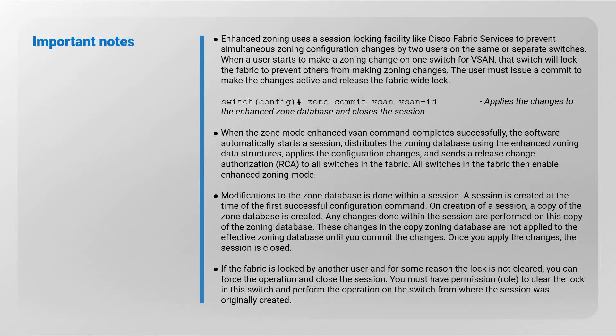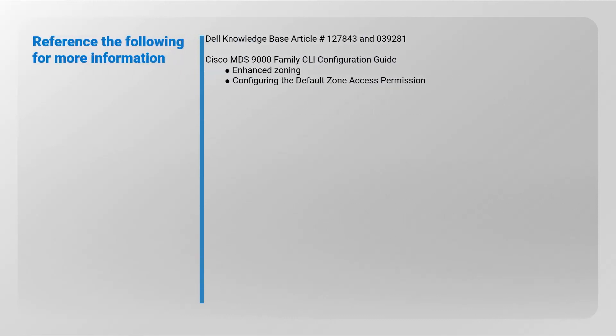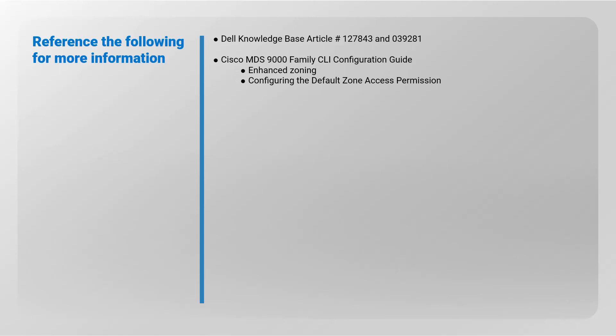Refer to the following for more information: Dell Knowledge Base article number 1278430392. Cisco MDS 9000 family CLI configuration guide — enhanced zoning, configuring the default zone access permission.